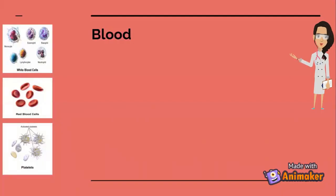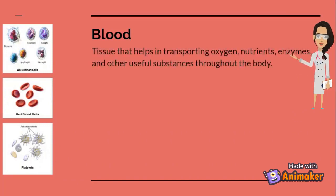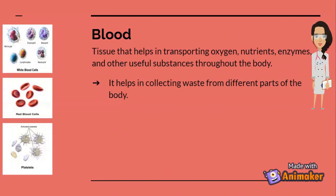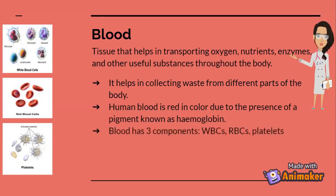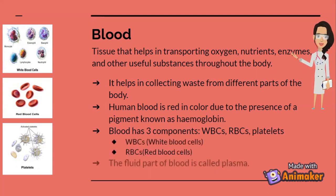Now let's learn about blood. Blood is a tissue that helps in transporting oxygen, nutrients, enzymes, and other useful substances throughout the body. It helps in collecting waste from different parts of the body. Human blood is red in color due to a pigment known as hemoglobin. Blood has three major components: white blood cells (WBCs), red blood cells (RBCs), and platelets. The fluid part of blood is known as plasma.